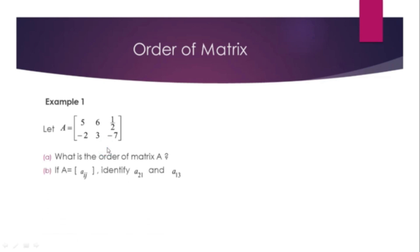If A equals A_ij, identify A_21 and A_13. A_21 refers to row 2, column 1, so A_21 is -2. A_13 refers to row 1, column 3, so A_13 is 1/2.